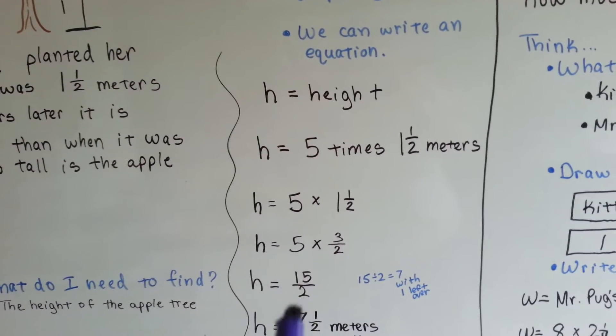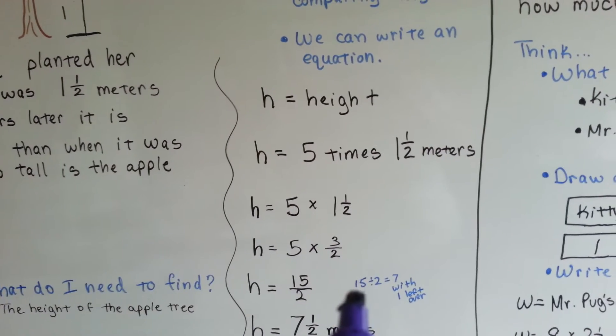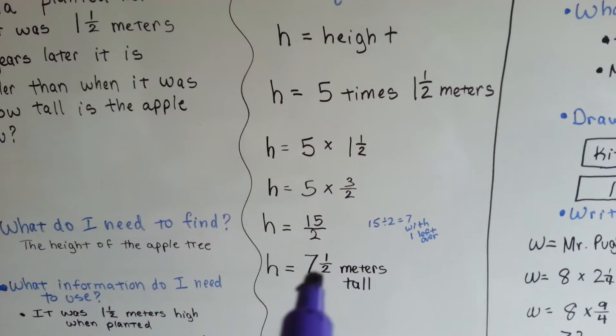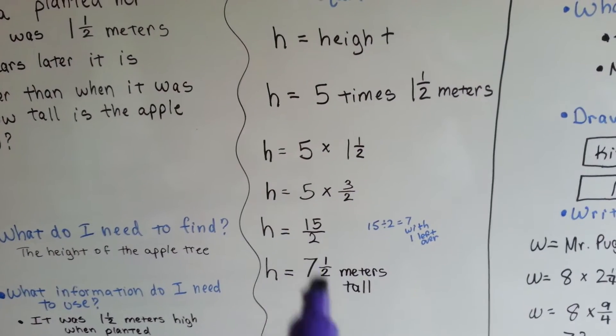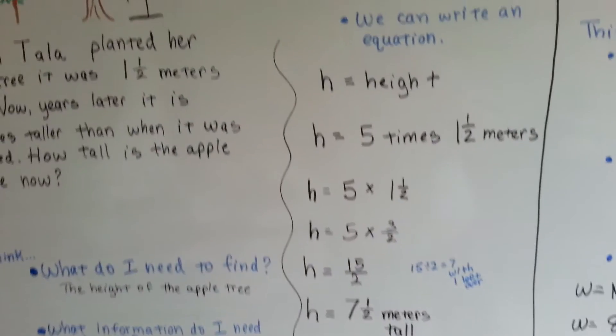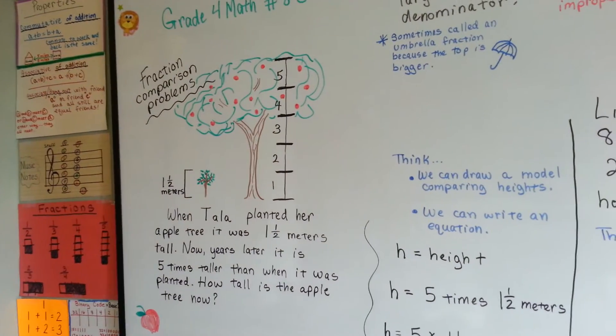Now we divide, because a fraction line is like a division sign. Fifteen divided by two is seven with one left over. That means the one goes over the two as the denominator, and we have seven and a half meters tall. The apple tree is now seven and a half meters tall.